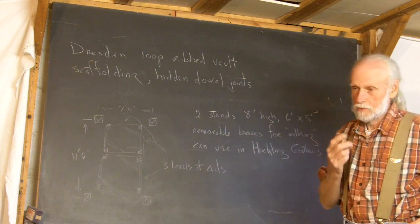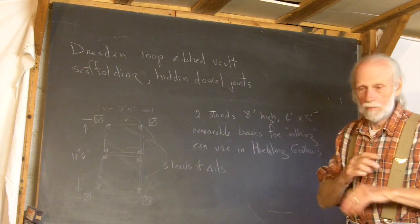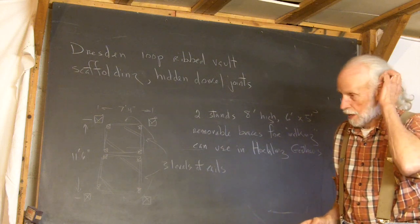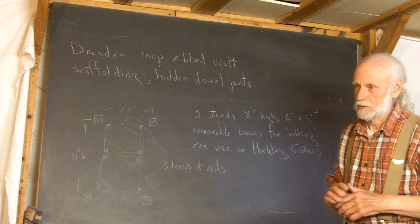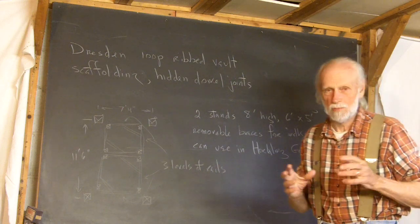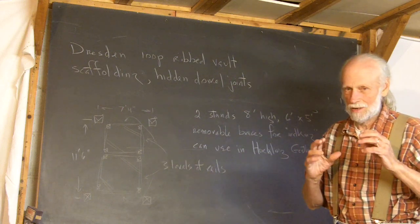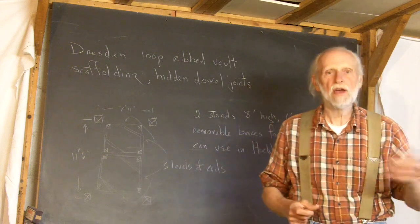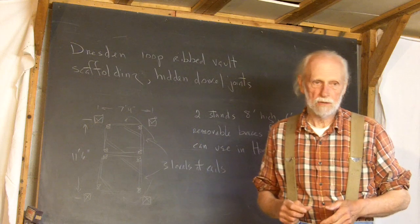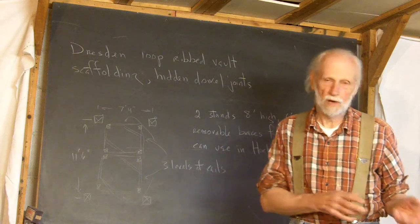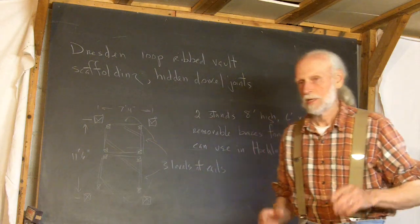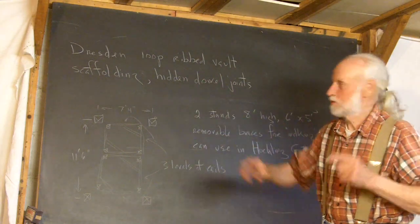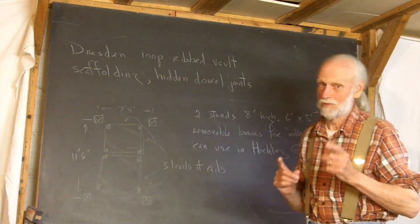For two nights, they bombed it to blitterings. For two nights, I think they destroyed 90% of the city. They firebombed it. Some people say it was because of revenge for what the Germans had done to Coventry. But in any case, Dresden is something that should not be forgotten.